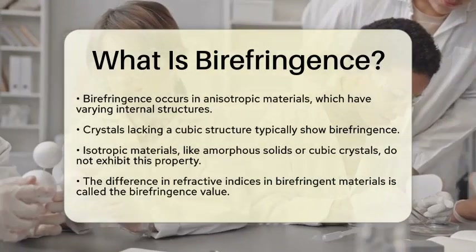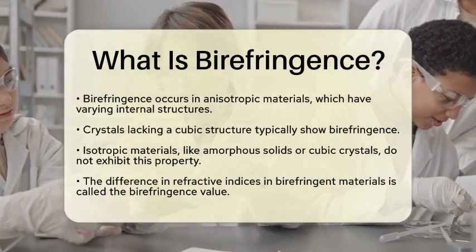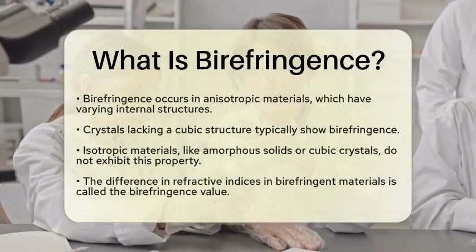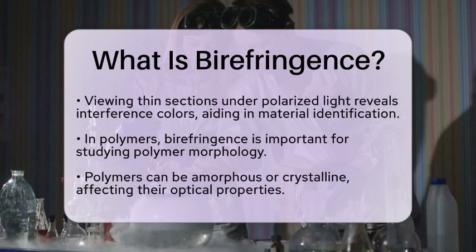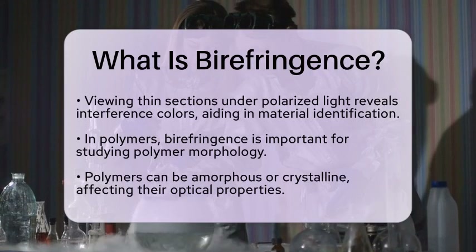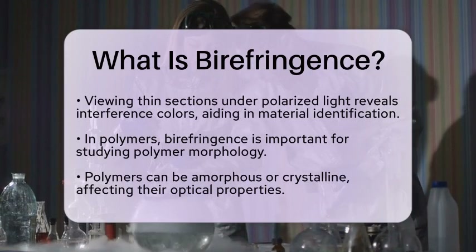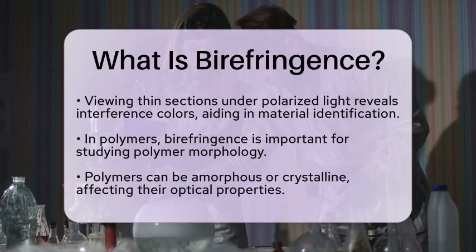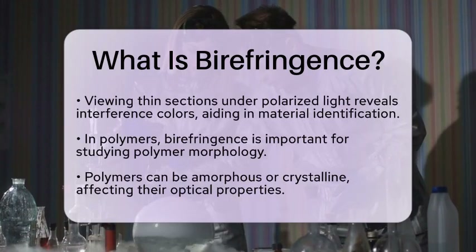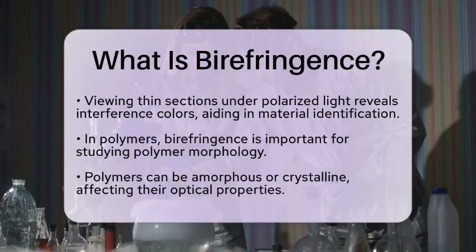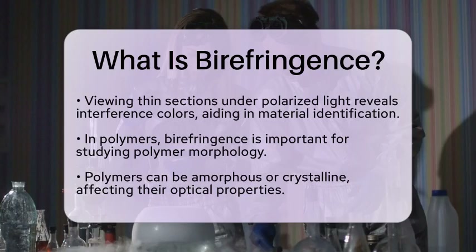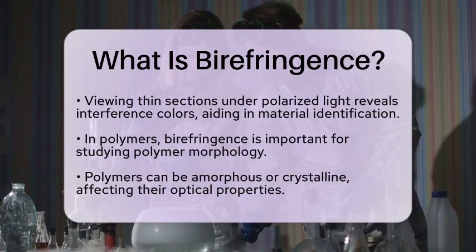In the context of polymers and chemistry education, birefringence plays an important role when studying polymer morphology. Polymers can be categorized as either amorphous or crystalline, and their degree of crystallinity has a direct impact on their optical properties. Crystalline regions in polymers are typically birefringent because their ordered molecular arrangement creates anisotropy in how light passes through.